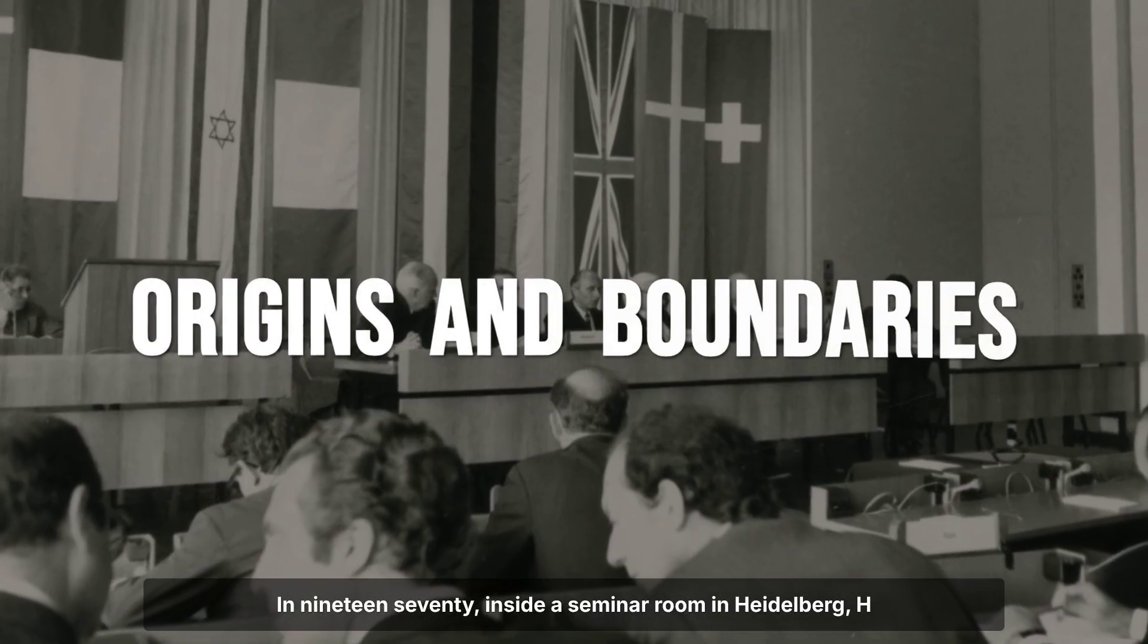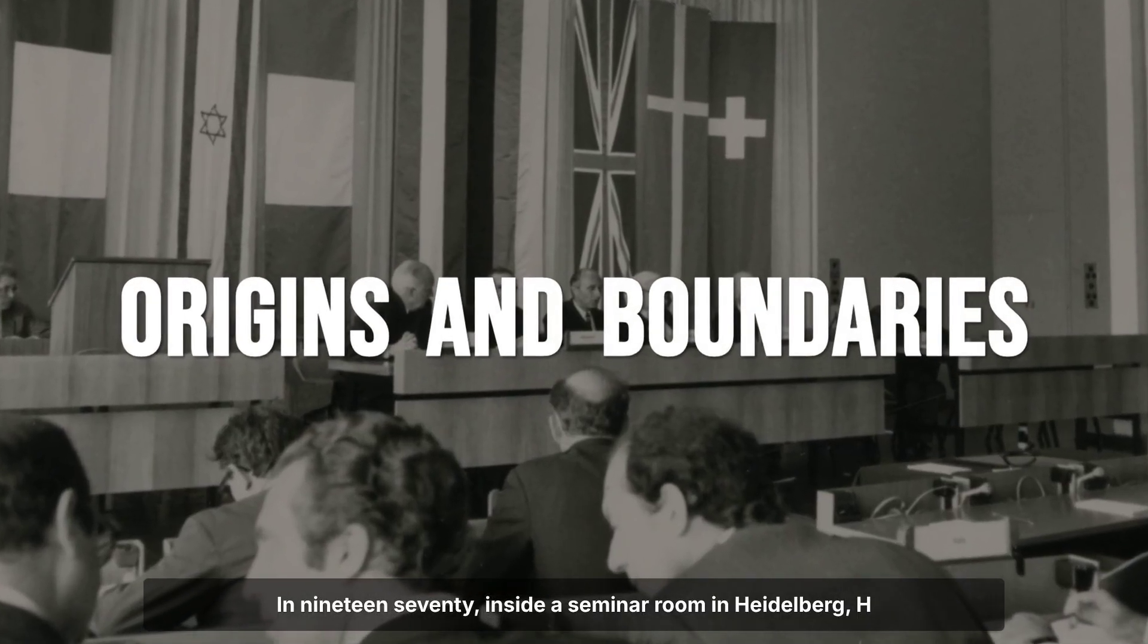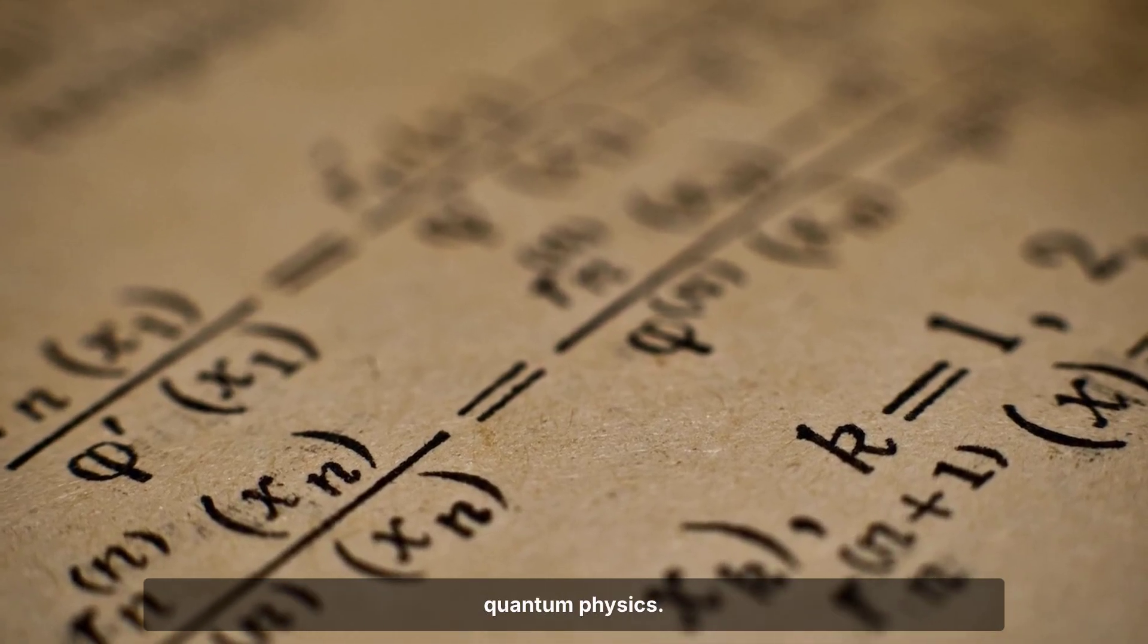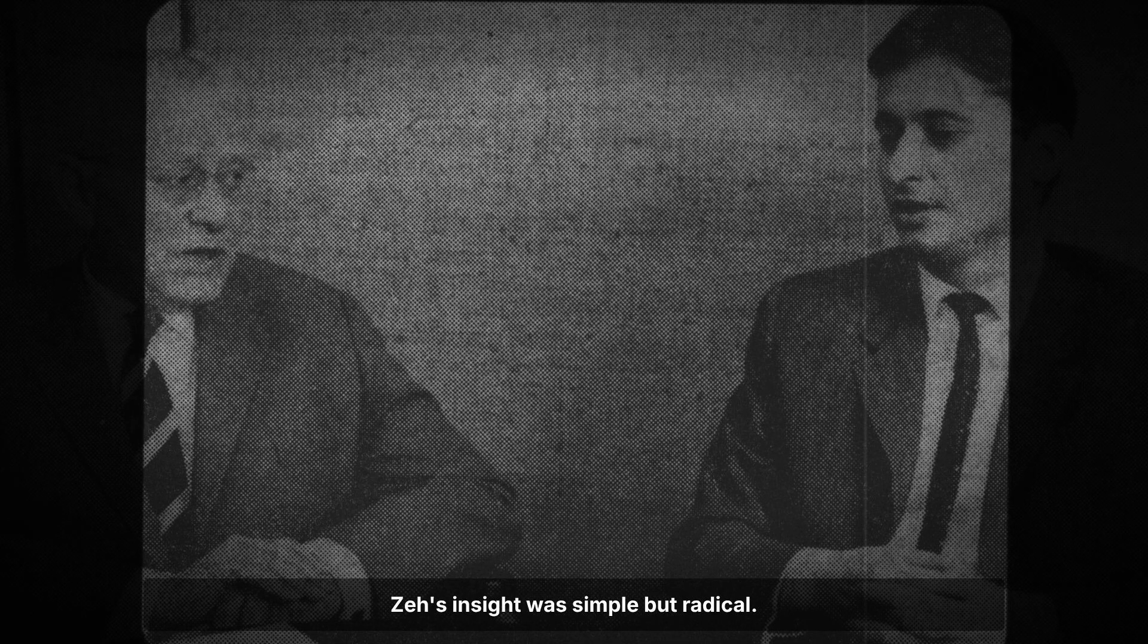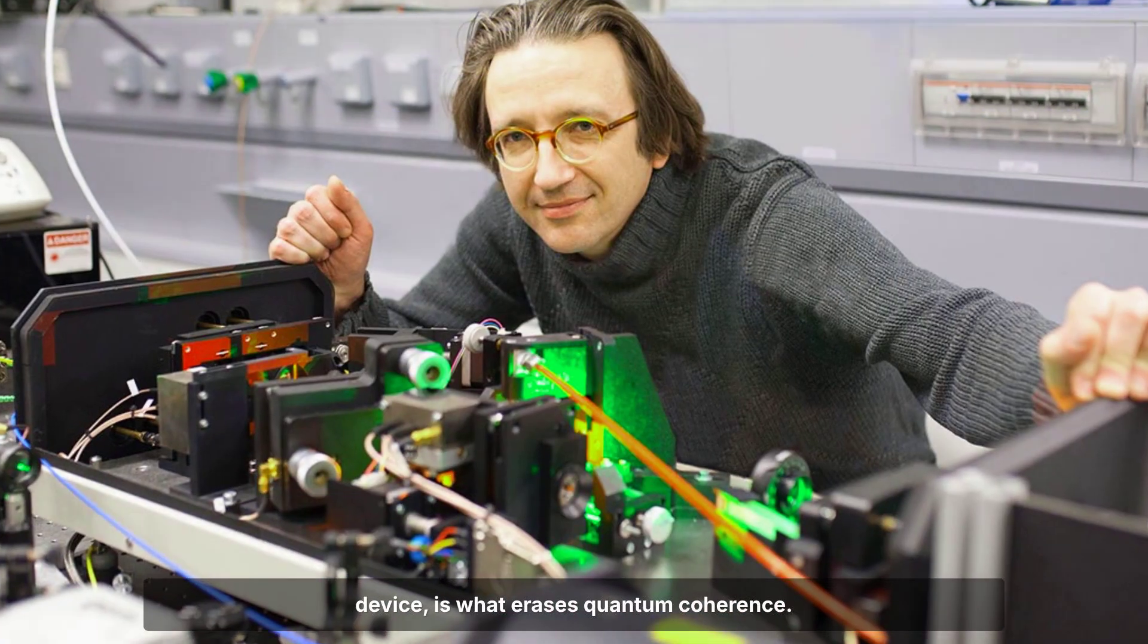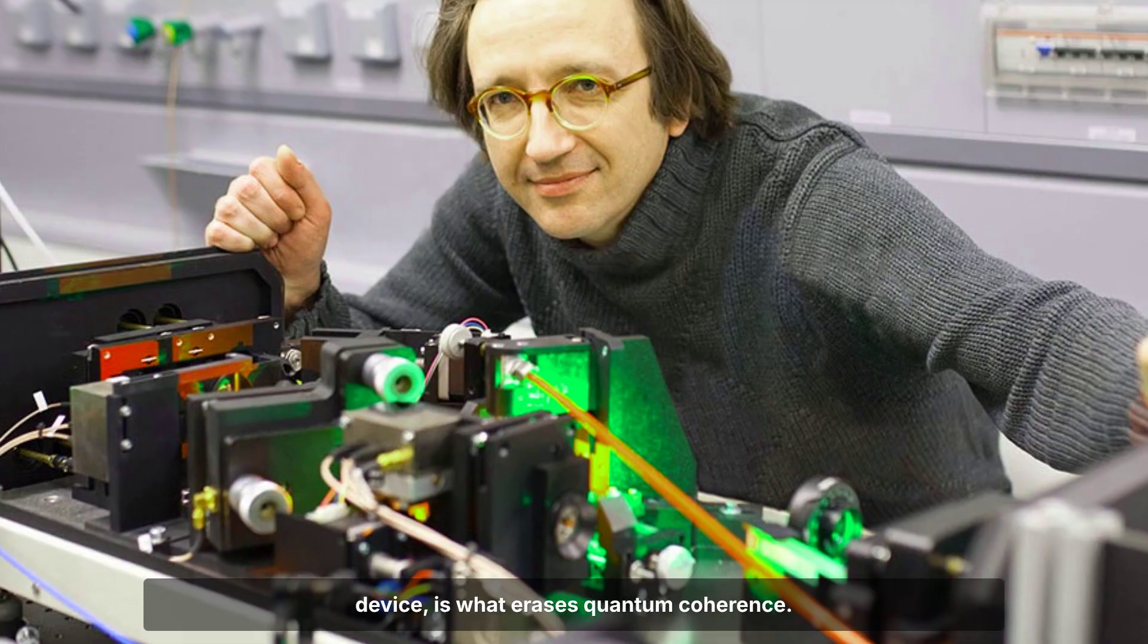In 1970, inside a seminar room in Heidelberg, H. Dieter Zeh published a paper that changed the course of quantum physics. Zeh's insight was simple but radical. The environment itself, not consciousness or a measuring device, is what erases quantum coherence.